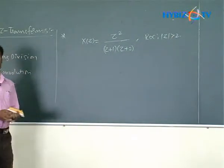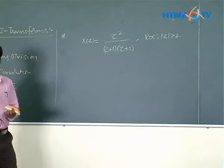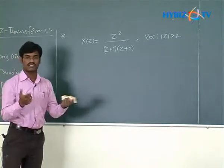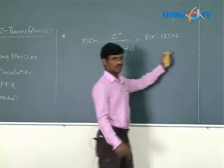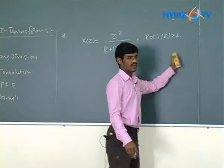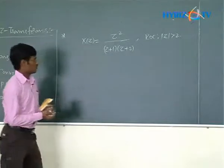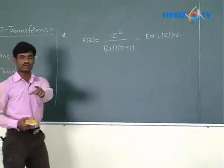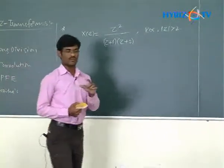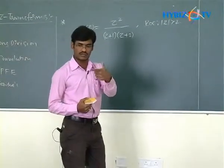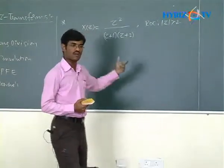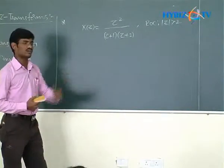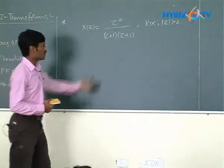The ROC condition mod Z greater than 2 tells us the sequence is a right-sided sequence. Using the convolution method, find the inverse Z transform of this Z domain function.